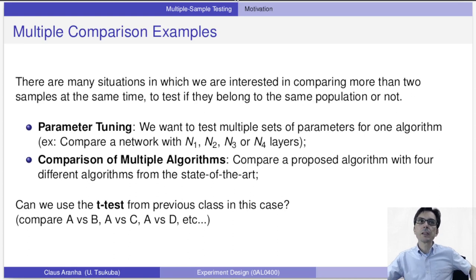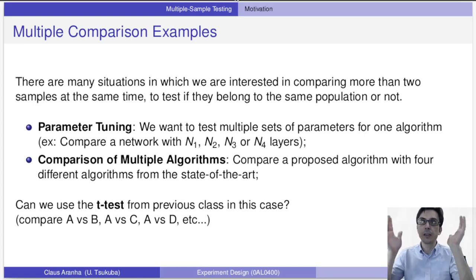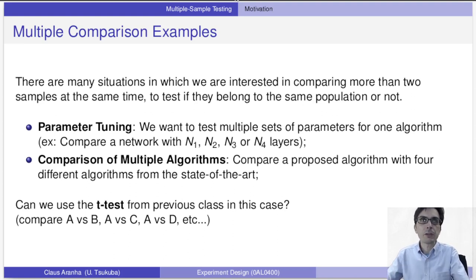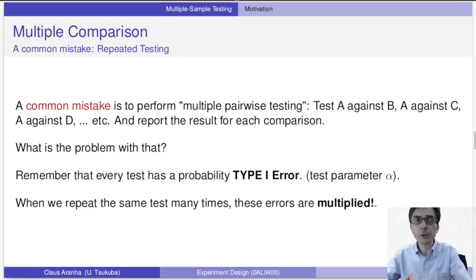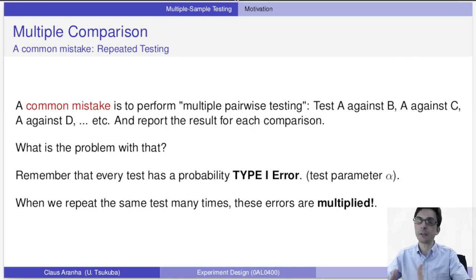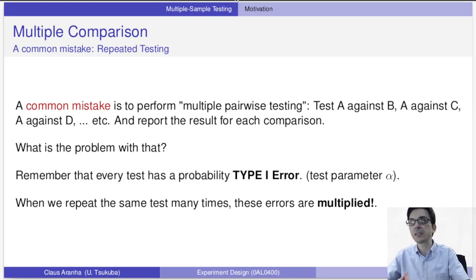Can we use the t-test from the previous class? In the t-test we had two algorithms A and B to compare. One way to think about it would be to do a round-robin comparison: compare A versus B, then A versus C, then A versus D. But unfortunately, doing this sort of repeated testing would be a mistake. We could do these comparisons and count how many times each test showed the smallest mean.